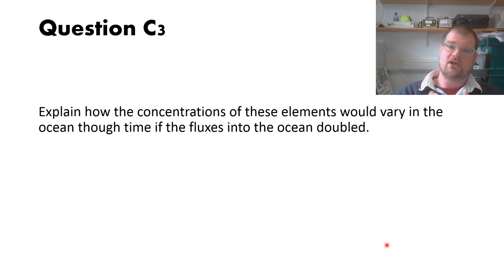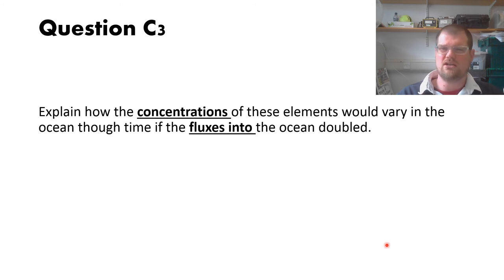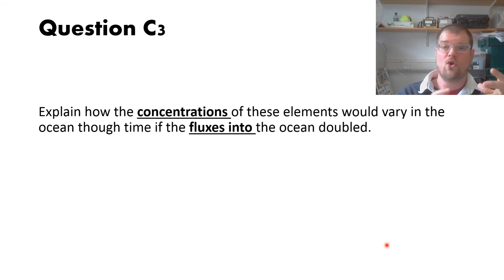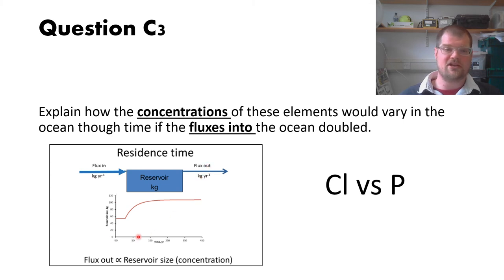The last part: explain how the concentrations of these elements would vary if the fluxes into the ocean were doubled. Note the word 'concentration' — quite a few people wrote about how residence times might change, which is somewhat abstract when you're not in steady state. But the question was about how concentrations would change. If we suddenly increase the flux in compared to the flux out, because we're adding more stuff and the flux out is initially unchanged, the concentration must increase.